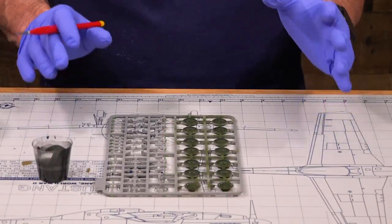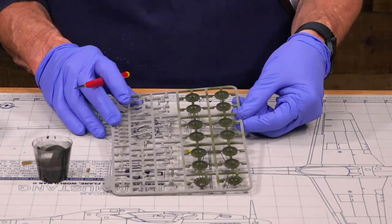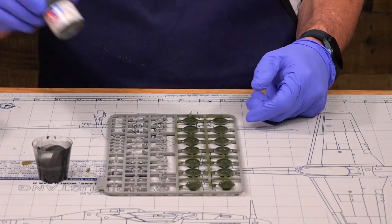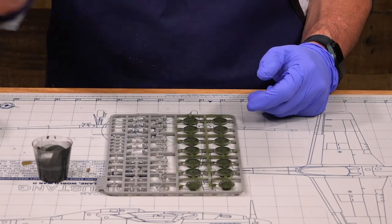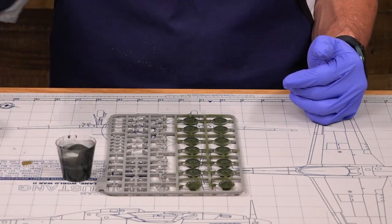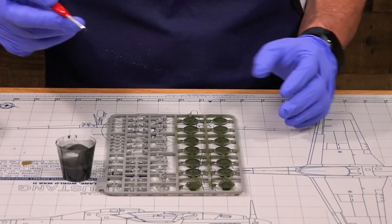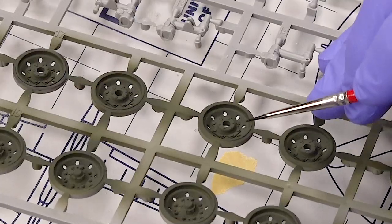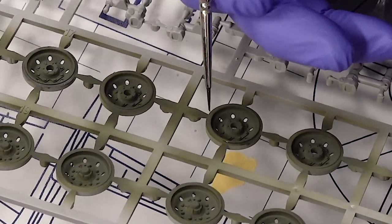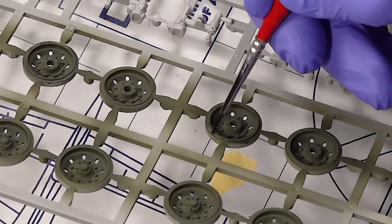So the first technique we're going to talk about is hand painting the tires. For this, I have already airbrushed these wheels olive green, the body color for the vehicle. Now I'm going to take some thin NATO black, Tamiya NATO black. I have pre-thinned this with some Tamiya acrylic thinner. And I'm going to do this, and it's going to be kind of like a wash. You're going to apply it to the rim of the tire, and you just want to touch it to it. And it should flow along the rim between the tire and the wheel.